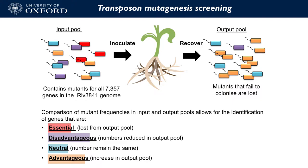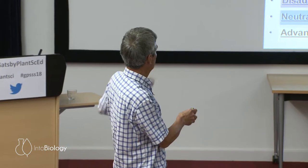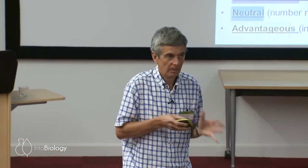In the input pool you have lots of different mutants — every single bacterium has a mutation in a different position. In our bacterium we have 7,357 genes. We put them through a plant rhizosphere and recover the output pool. If one had a mutation in a gene needed to stick to plant roots, it grows fine in the lab but gets lost when you put it through plant selection. This high-throughput sequencing technique lets us work out where all the transposon mutations are and identify which ones disappear.